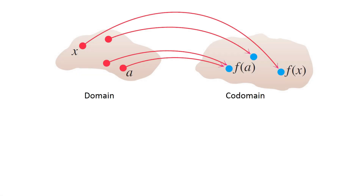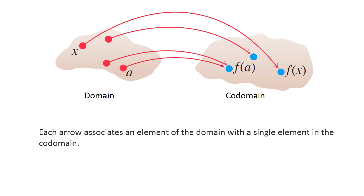We can also picture a function as an arrow diagram. Each arrow associates an element of the domain with a single element in the codomain. In this diagram, the arrows indicate that f of a is associated with a, f of x is associated with x, and so on.